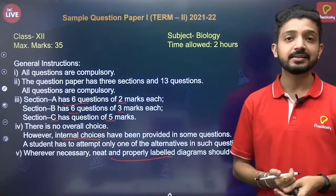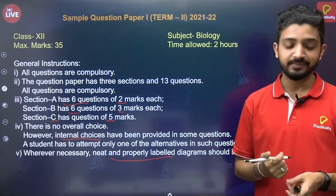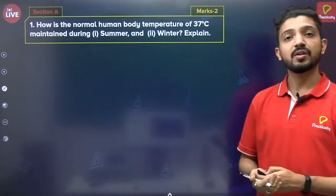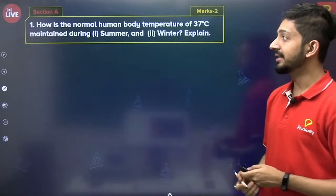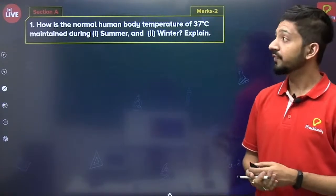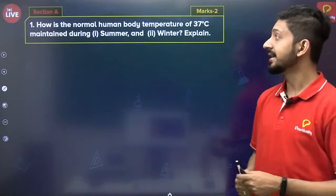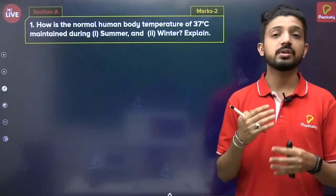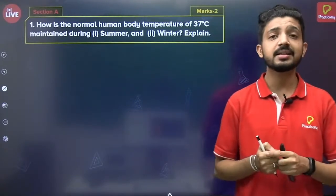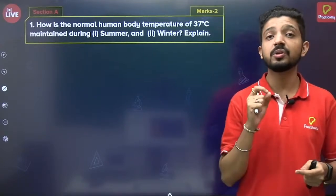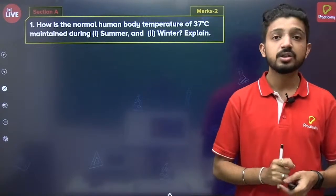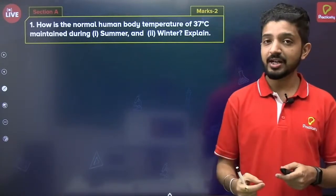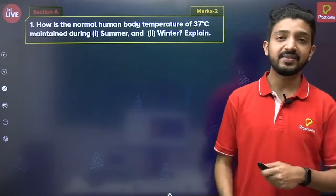Based on this pattern, let us see sample paper one. Here is the first question from Section A, which is of two marks: How is the normal human body temperature of 37 degrees Celsius maintained during summers and winter? I want everyone watching to try to answer this question — try to frame the answer, since it is not an MCQ type question. You can write important points in the chat box and then we will discuss.